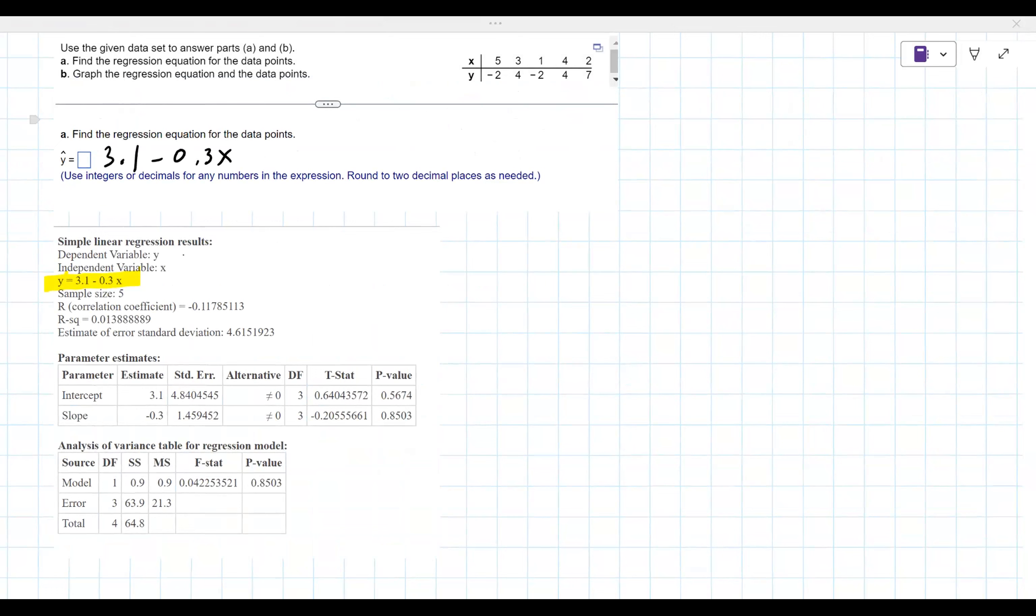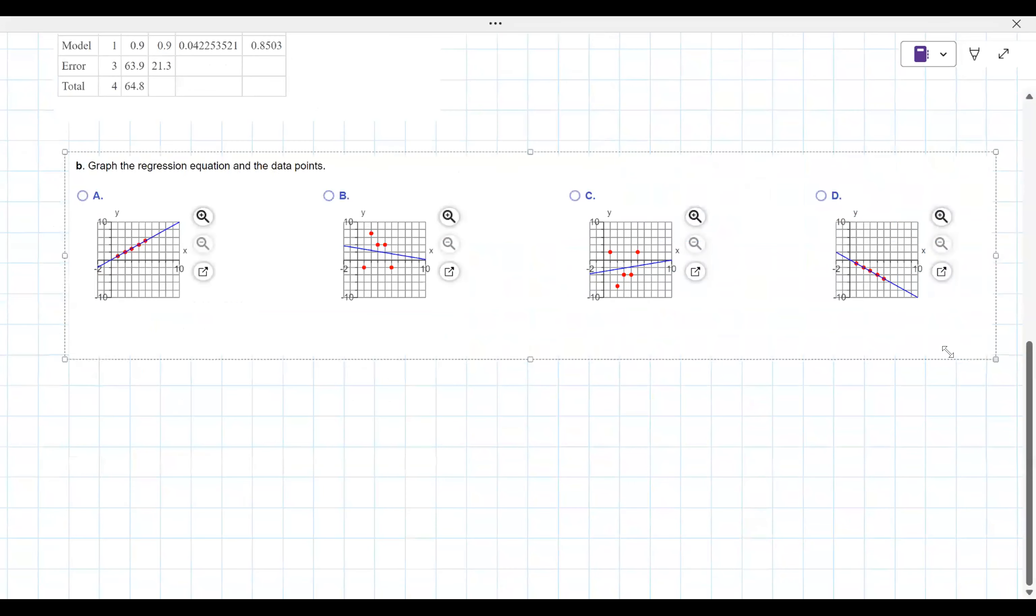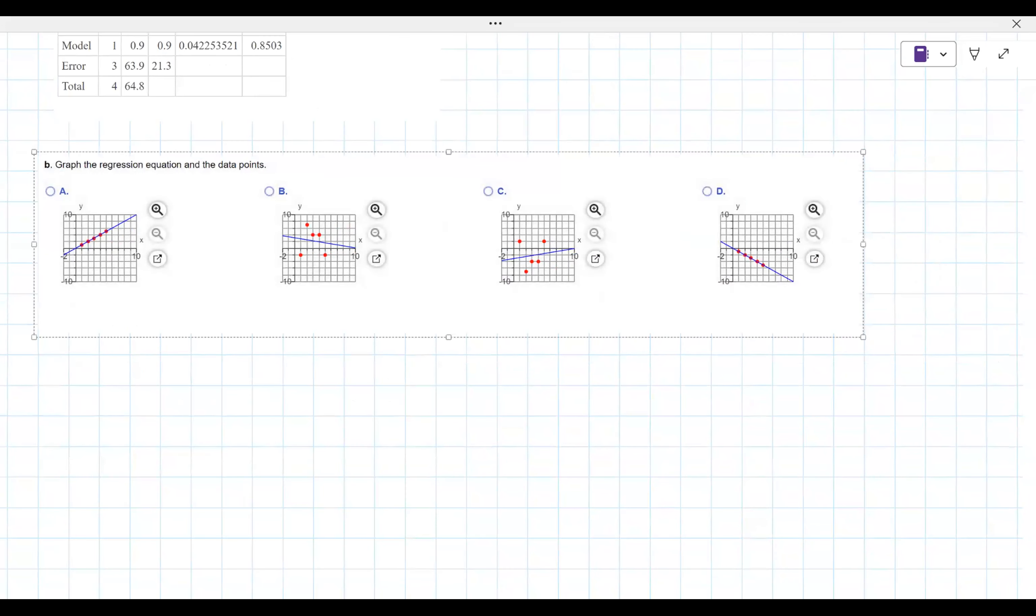That normally it doesn't work out that perfectly. Normally you have to round, even says that, hey, round to two decimal places. But the next thing is they ask for a plot of the data. So let me grab the plots here.